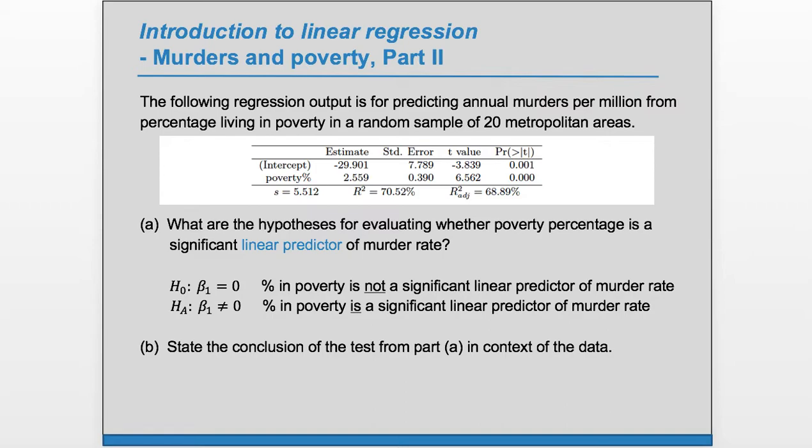Part b: state the conclusion of the test from part a in context of the data. First, we should verify that conditions are met for this test. We would want the residual plot to have no pattern. Also, we don't have to calculate the test statistic t, but let's do it for completion.